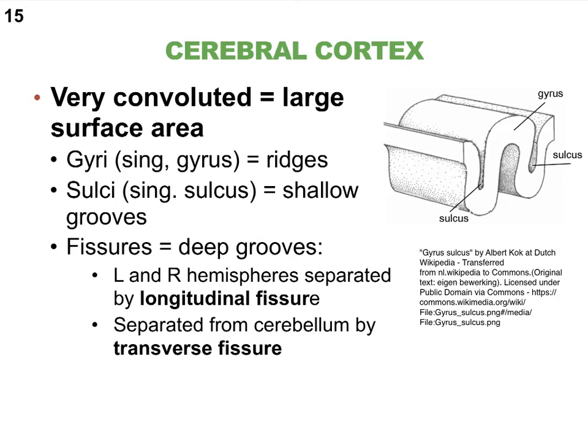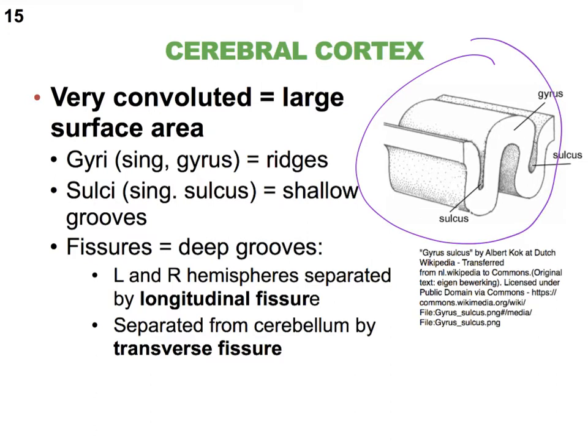We had already introduced you to the major functions of the cerebral cortex. If we look at slide 15, titled 'the cerebral cortex,' we're now focusing in on a portion of that very convoluted cerebral cortex that's made up of gray matter, meaning that it's mostly cell bodies with some unmyelinated fibers.